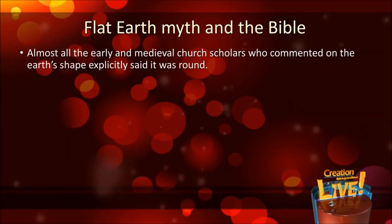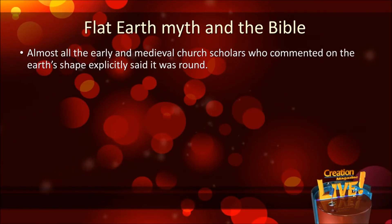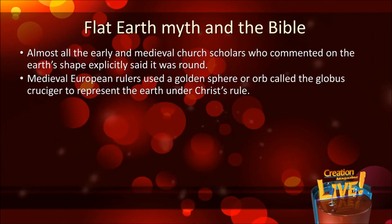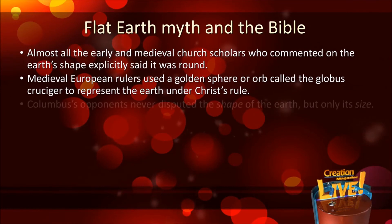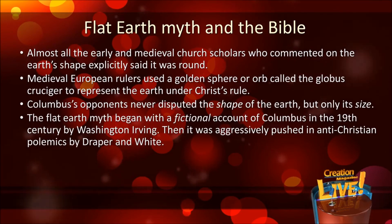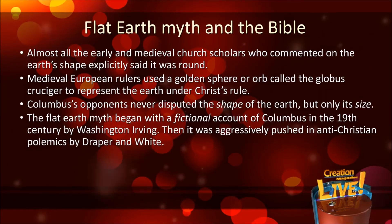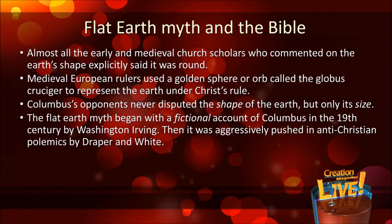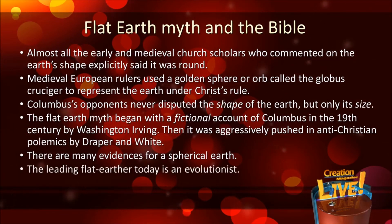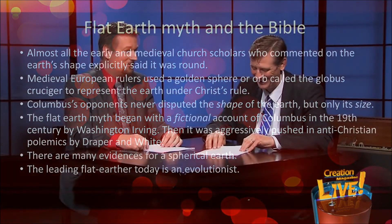Almost all the early and medieval church scholars who commented on the Earth's shape explicitly said that it was round. Medieval European rulers used a golden sphere, or orb, called the Globus Cruciger, to represent the Earth under Christ's rule, again emphasizing that they understood that the Earth was a sphere. Columbus' opponents never disputed the shape of the Earth, but only its size. And they were right — the Earth is much bigger than what Columbus thought. The flat-earth myth began with a fictional account of Columbus in the 19th century by Washington Irving. Then it was aggressively pushed in influential anti-Christian polemics by Draper and White. And of course, there are many evidences for a spherical Earth. The final irony is the leading flat-earther today is an evolutionist. So there you have it.